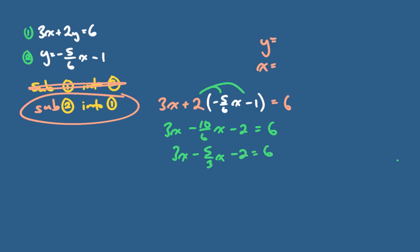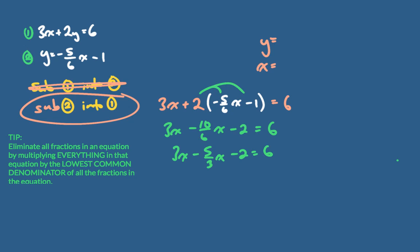Now I have an equation with fractions. If you have an equation with fractions, you can eliminate them by multiplying everything in the equation by the lowest common denominator. This is not something you have to do, but it makes life easier, especially if you're not comfortable working with fractions. The only denominator here is 3, so I'm going to multiply everything in this equation by 3.